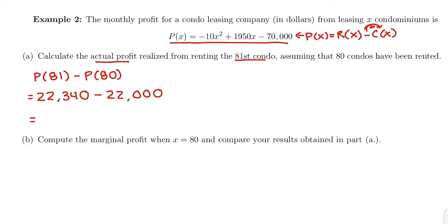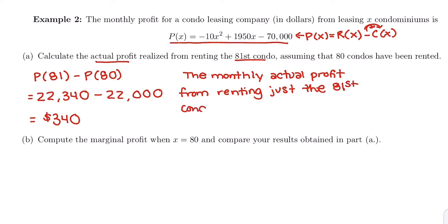So the difference between these two is $340. Interpreting that actual profit, $340 says the monthly actual profit from renting just the 81st condo is $340. So just leasing or renting that 81st condo gives them $340 that month in profit.